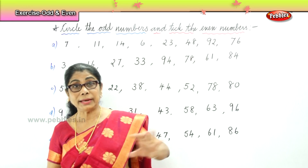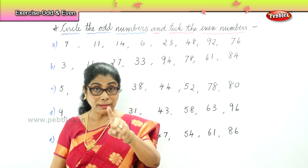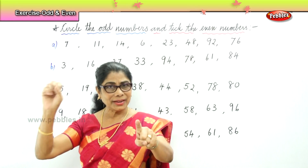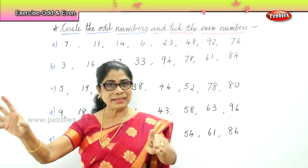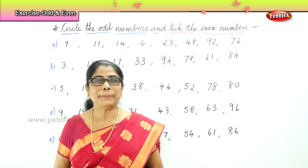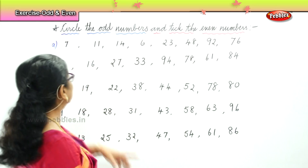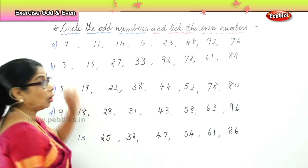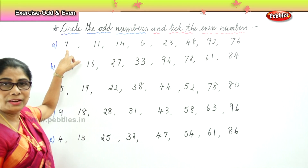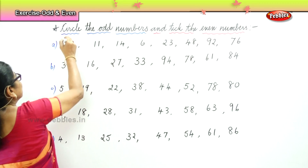So in all other numbers, any number that ends in one, three, five, seven, or nine — they are all odd numbers. Now let's do the first set and circle the odd numbers. Is seven an odd number? Yes. Very good, so circle it.